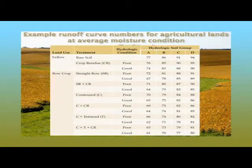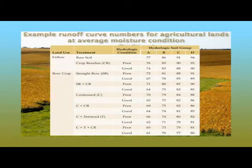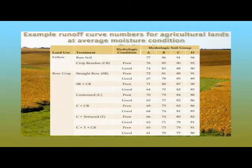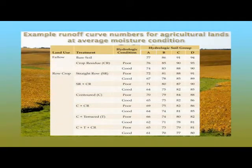Some examples of how curve number might vary based on treatment and hydrologic soil group: under soil group B with straight rows in poor hydrologic condition, we might have a curve number of 81. With straight rows in good hydrologic condition and soil group B, the curve number drops to 78. Moving to a contour system with good hydrologic condition and soil group B, the curve number drops further to 75.